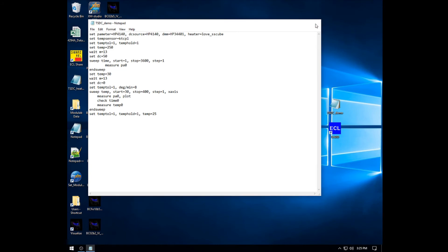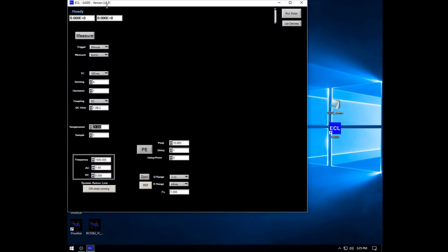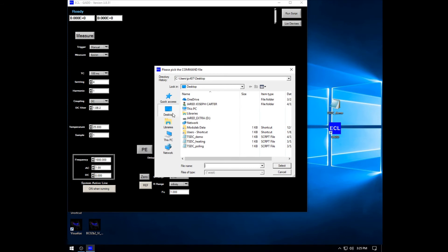Now, let's open a script file using the program called GET, which is the interface between the experimental setup and the computer.